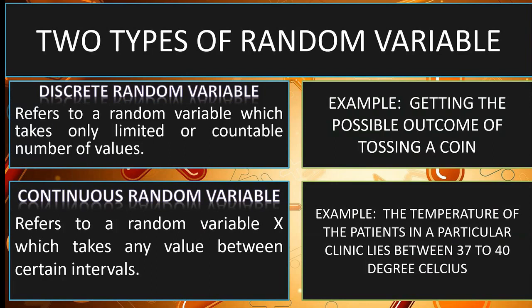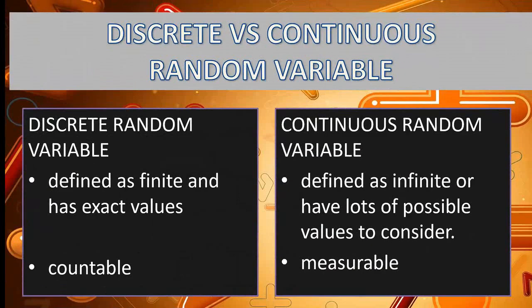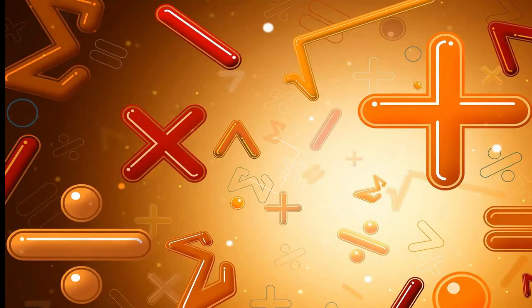To make it simpler, we can say discrete random variable is finite and has exact values, while continuous random variable is defined as infinite or have lots of possible values to consider. Another difference is, discrete random variable is countable, while continuous random variable is measurable. Thank you for listening.